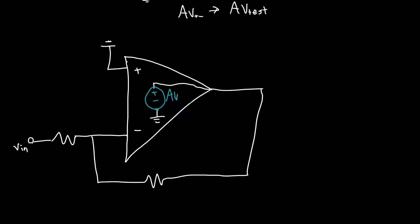We need to replace this dependent source with an independent source of value A V test. We've now got an independent source A V test. We need to compute now V plus minus, which is V plus minus V minus. Here we see that V plus, the voltage at this terminal, is just zero, so V plus minus is just the negative of V minus. We also need to ground the input because the input is no longer involved in our feedback network.